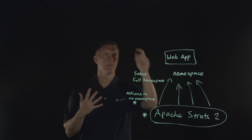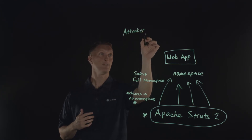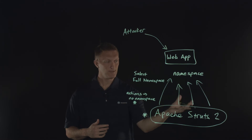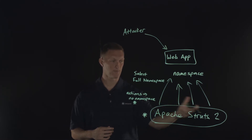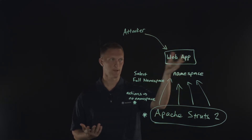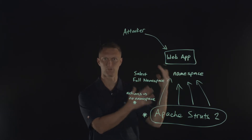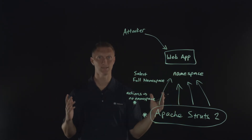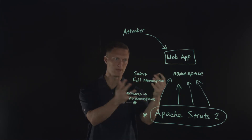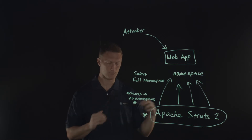What happens here is you're going to have an attacker that's going to request your web application. These web applications built from Apache Struts 2 are publicly facing applications, so attackers can very easily attack and exploit these problems directly. They can also scan for these things very easily — looking for the very specific conditions that need to be met to exploit this. They can scan for that very easily, so this is a big problem.